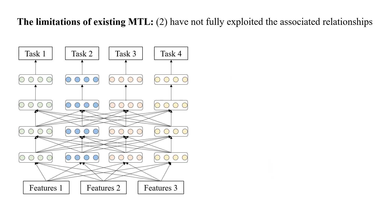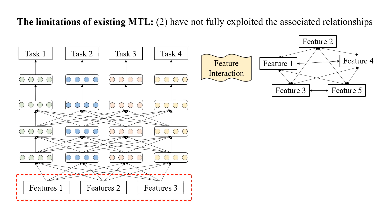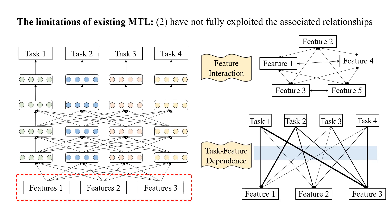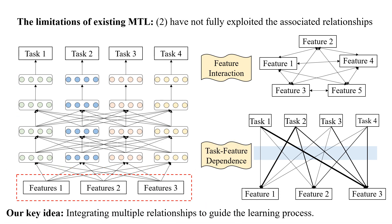Second, apart from task relationships, feature dependencies and feature interactions would also be important to guide the learning process. For example, different tasks may rely on different features. To fill this research gap, the key idea of our solution is to model multiple relationships to guide the learning process.